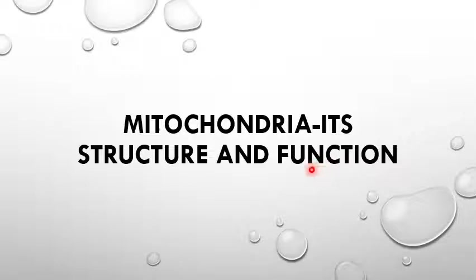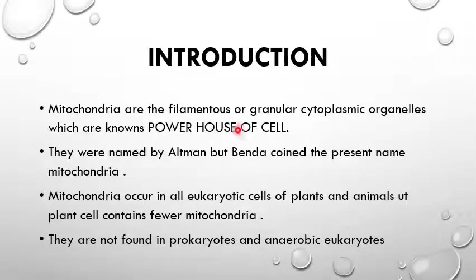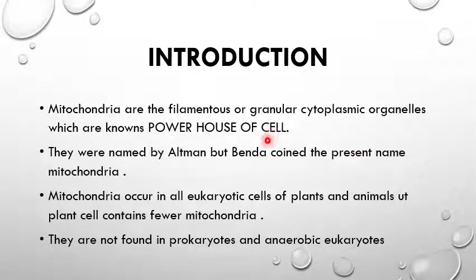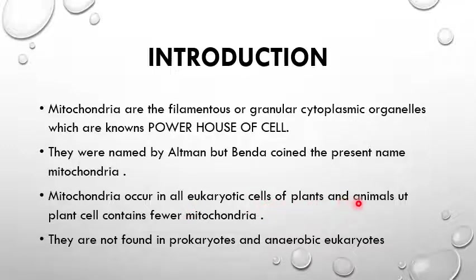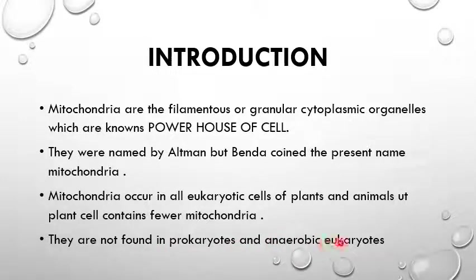Mitochondria is a very important organelle. Mitochondria are filamentous or granular cytoplasmic organelles which are known as the powerhouse of the cell. They were named by Altman, but Benda coined the present name mitochondria. Mitochondria occur in all eukaryotic cells of plants and animals, but plant cells contain fewer mitochondria. They are not found in prokaryotes and anaerobic eukaryotes.